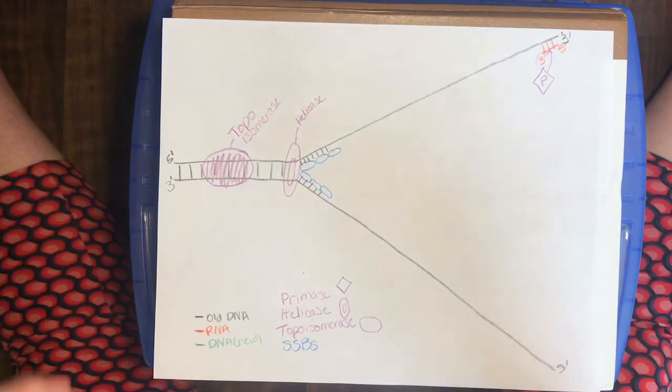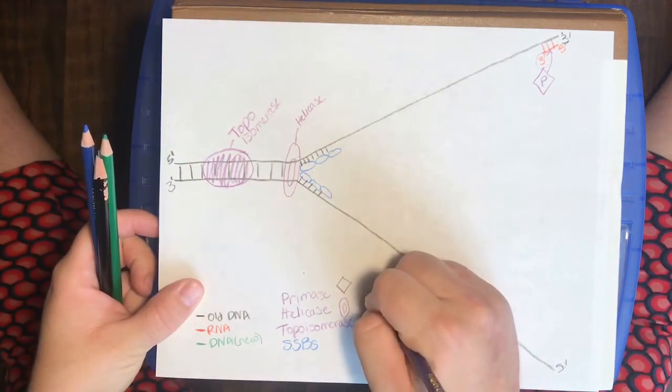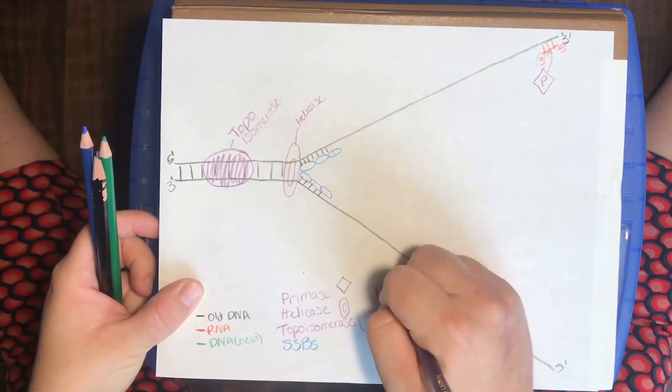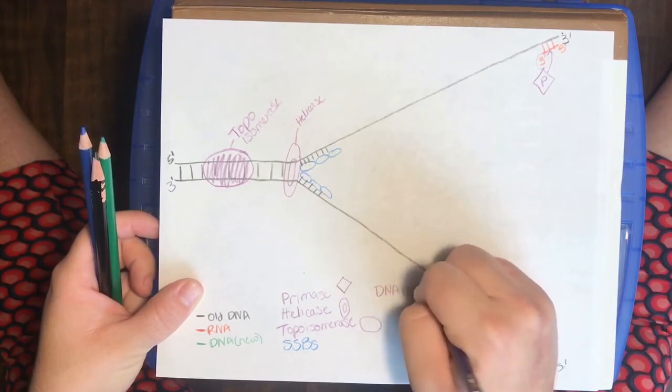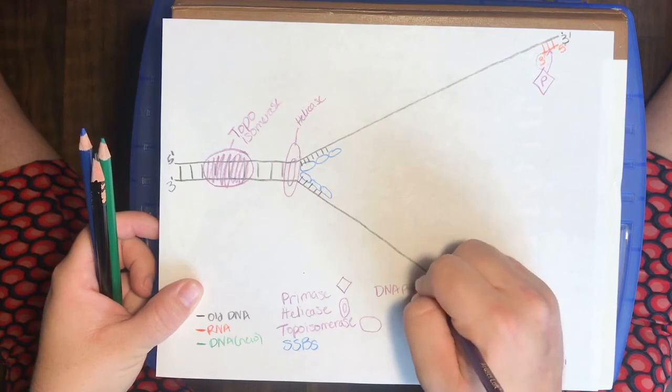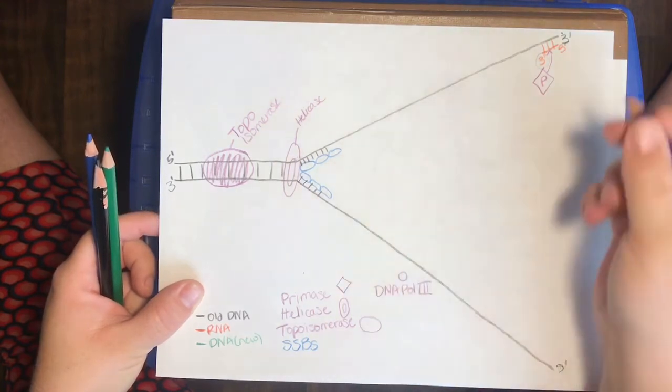So, our DNA polymerase, we're going to call it DNA pol 3. And this is going to be a circle, so like this.